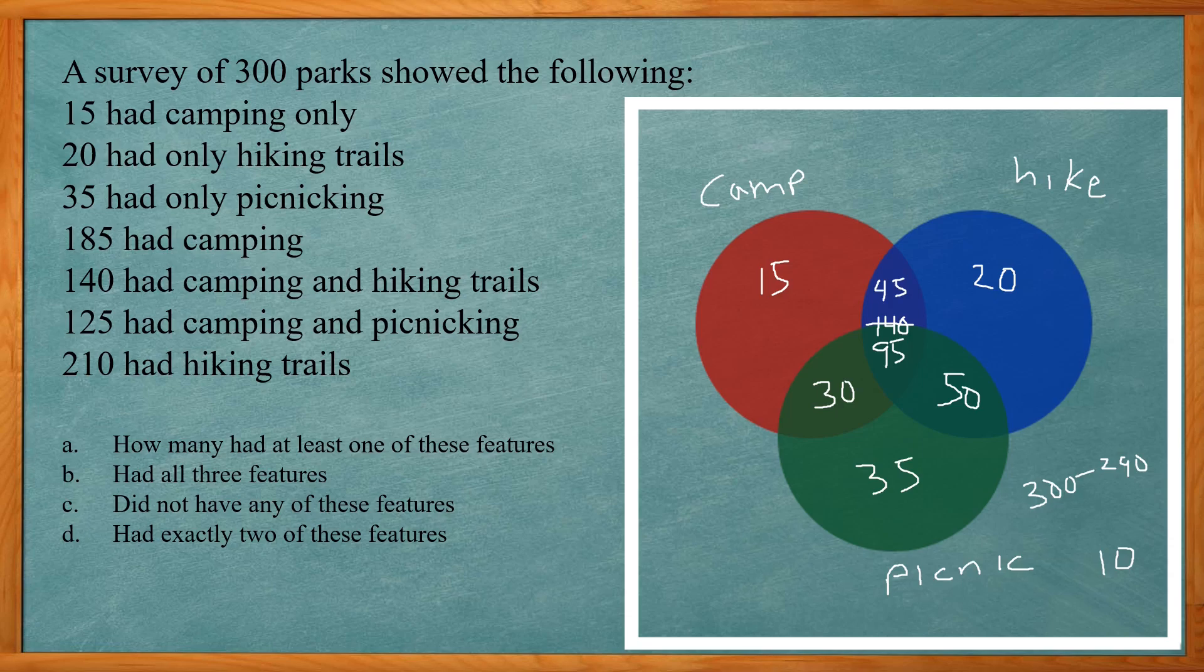Alright so if I go and answer the questions, how many had at least one of these features? So that's gonna be all of them that are in one of the circles: 15 plus 45 plus 20 plus 30 plus 95 plus 50 plus 35. That came out to be 290.